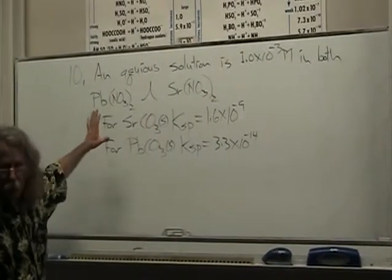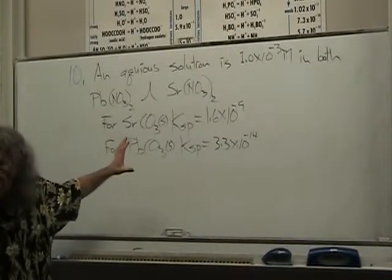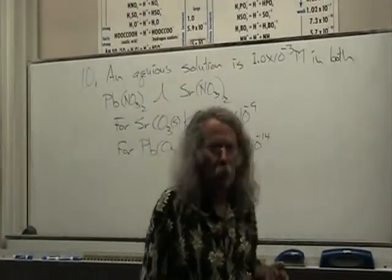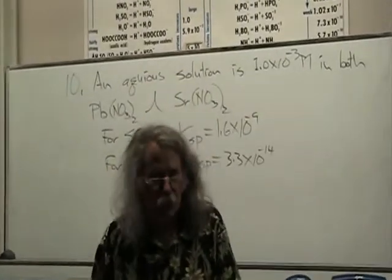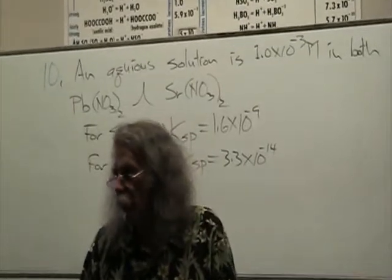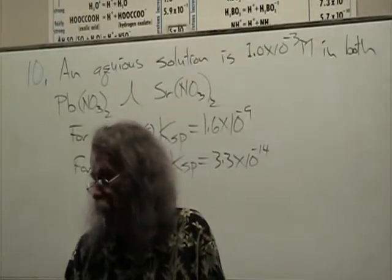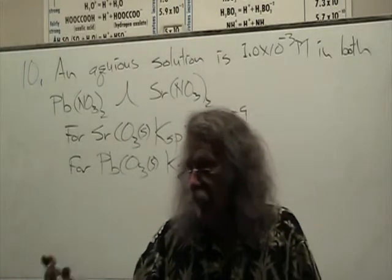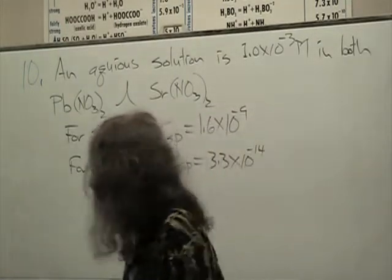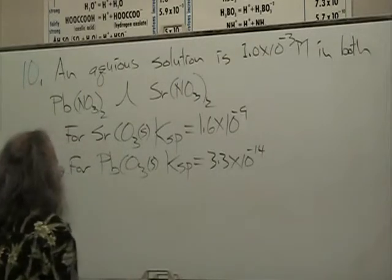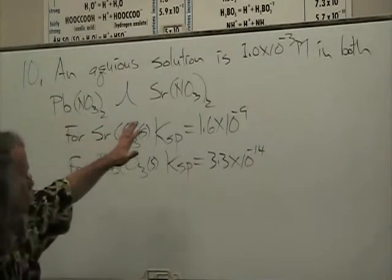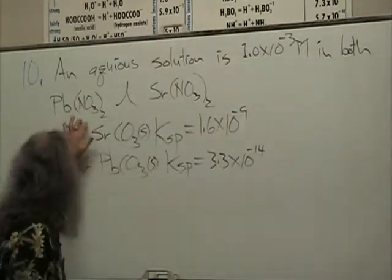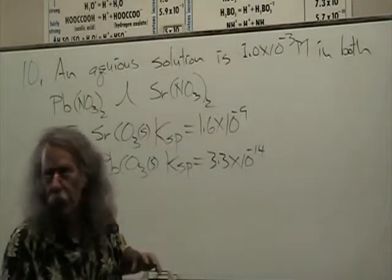Problem 10, and this is the information you're given. This is actually going to be described in what's a process known as selective precipitation, which is something we've all done in the laboratory. You want to selectively precipitate one material while leaving the other in solution. So I'm given an aqueous solution that is 10 to the minus 3rd molar in both lead nitrate and strontium nitrate.